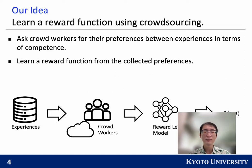Our idea is to learn the reward function using crowdsourcing. In particular, we ask crowd workers to compare pairs of experiences and tell us the better ones. Then, we learn a reward function from the collective preferences and use the reward function to train agents.